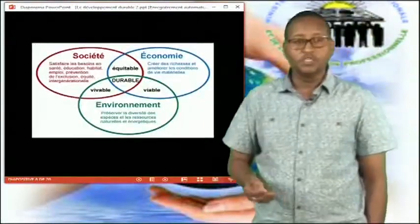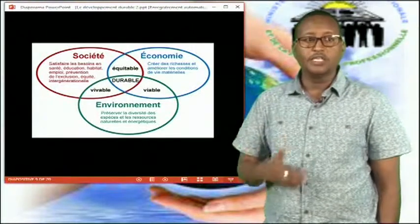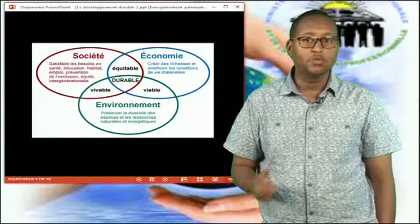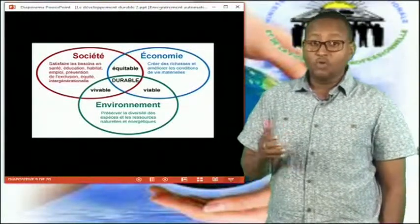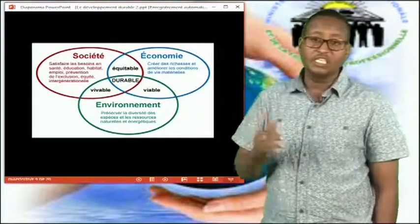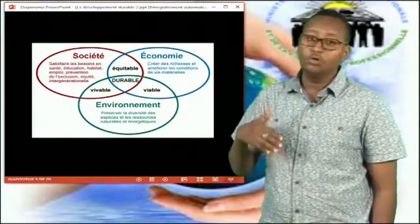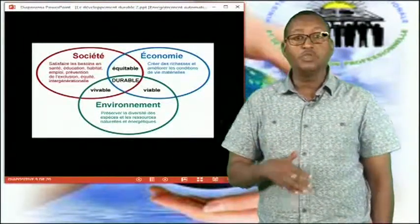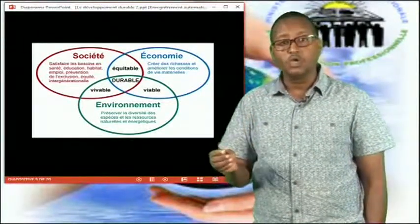Le social veut dire assurer les besoins essentiels à tous les citoyens. Par exemple, l'accès à l'eau, à l'éducation et à la santé pour tous les citoyens. L'environnement, il revient à dire préserver la diversité des espèces, ainsi que le passage de l'énergie fossile aux énergies renouvelables, adopter de nouvelles attitudes et de nouvelles manières de consommation. L'économie, ça veut dire créer des richesses et améliorer les conditions de vie matérielles de chaque citoyen.